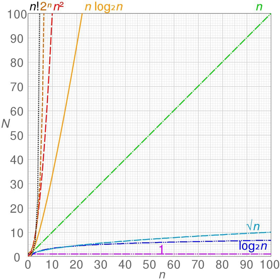An algorithm is said to take superpolynomial time if T(n) is not bounded above by any polynomial. Using little-omega notation, it is ω(n^c) time for all constants c, where n is the input parameter, typically the number of bits in the input. For example, an algorithm that runs for 2^n steps on an input of size n requires superpolynomial time. An algorithm that uses exponential resources is clearly superpolynomial, but some algorithms are only very weakly superpolynomial. For example, the Adleman–Pomerance–Rumely primality test runs in n^(O(log log n)) time on n-bit inputs; this grows faster than any polynomial for large enough n, but the input size must become impractically large before it cannot be dominated by a polynomial with small degree.